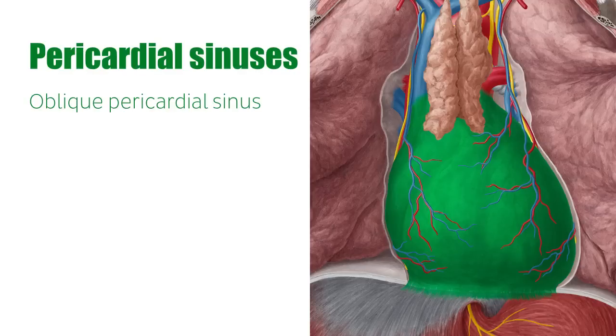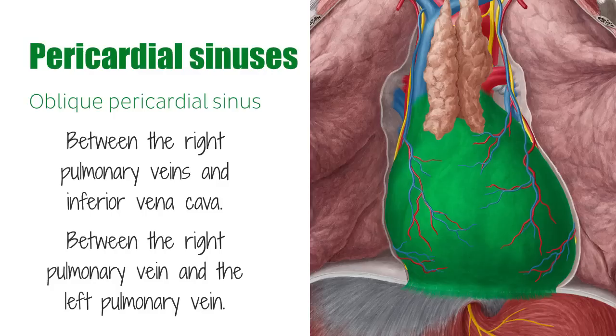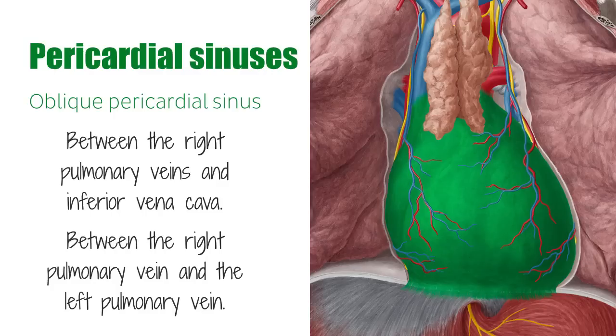More specifically, the oblique sinus lies between the right pulmonary veins and inferior vena cava, and between the right pulmonary vein and the left pulmonary vein.